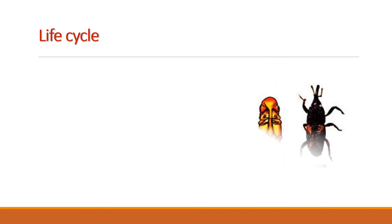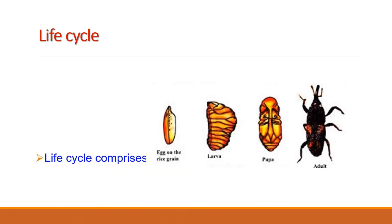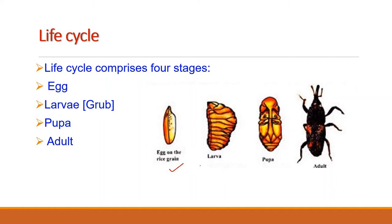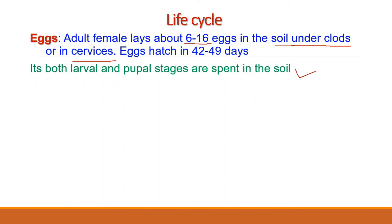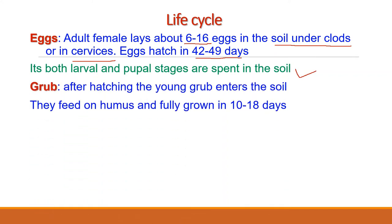The life cycle of this weevil comprises 4 stages: egg, larva which is known as grub in this case, pupa and adult. Eggs are very small in size and the adult female lays about 6 to 16 eggs in the soil under clods or in crevices in the ground. Both the larval and pupal stages are spent in the soil. Eggs hatch in 42 to 49 days.